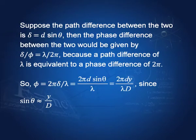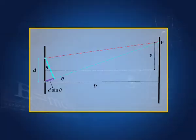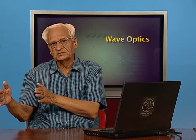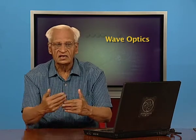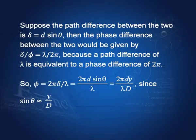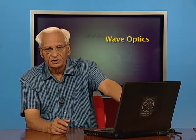Suppose the path difference between the two is δ = d·sinθ. Knowing that if the path difference is equal to λ then the phase difference equals 2π, we get φ = 2πδ/λ. Since δ = d·sinθ, we get φ = 2πd·sinθ/λ, which we can also write as 2πdy/(λD) since sinθ = y/D. This is all recalled from the last lecture.